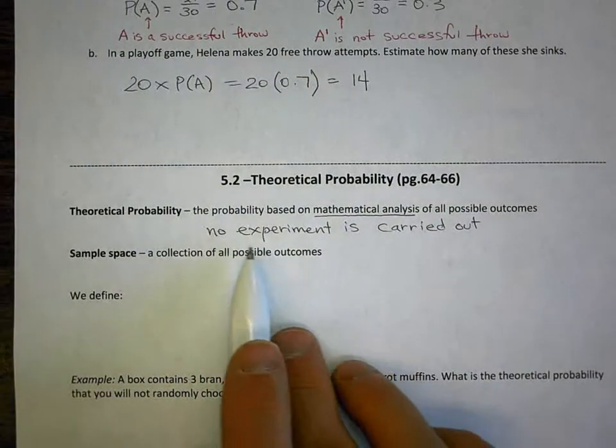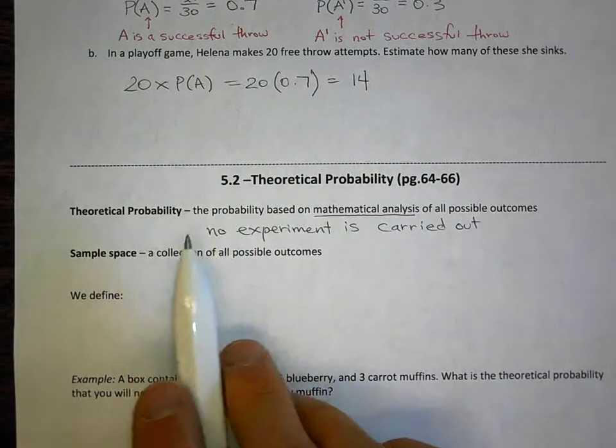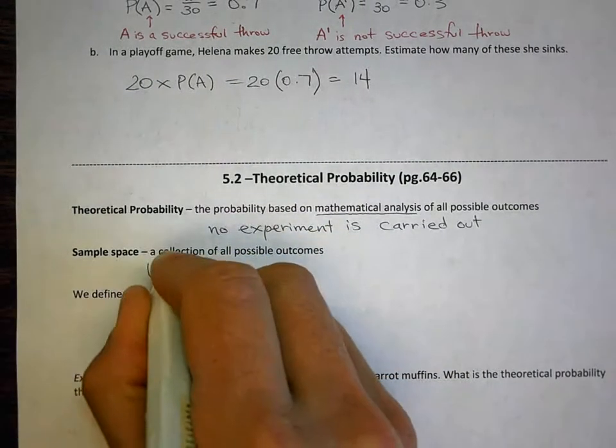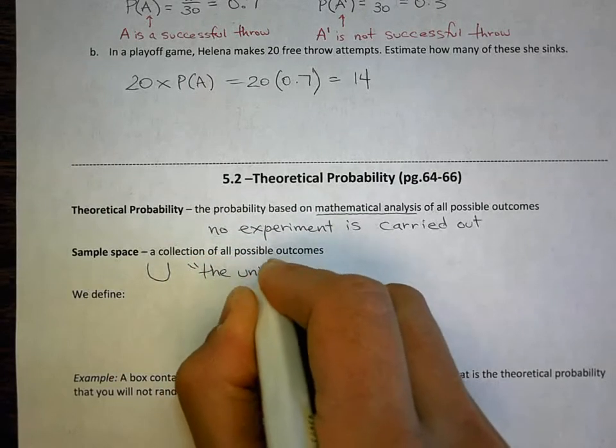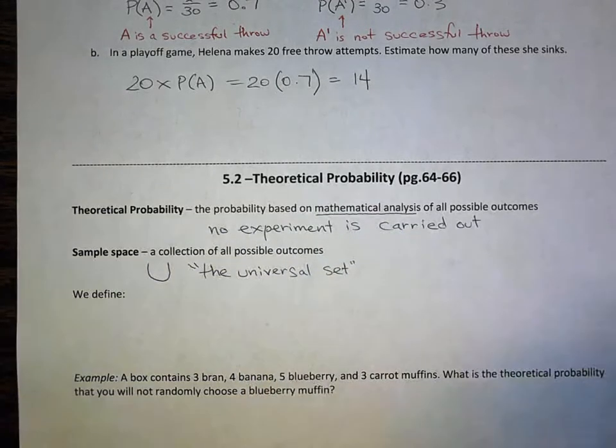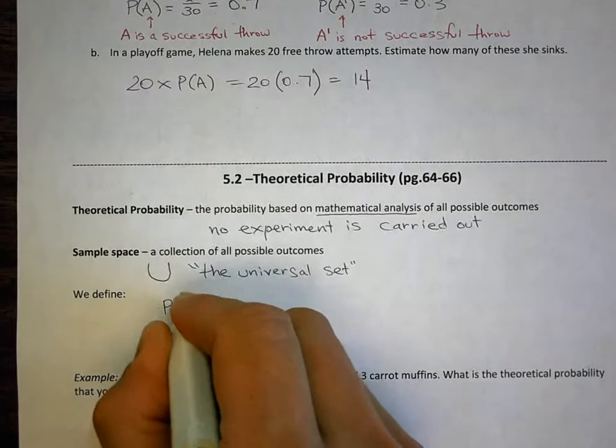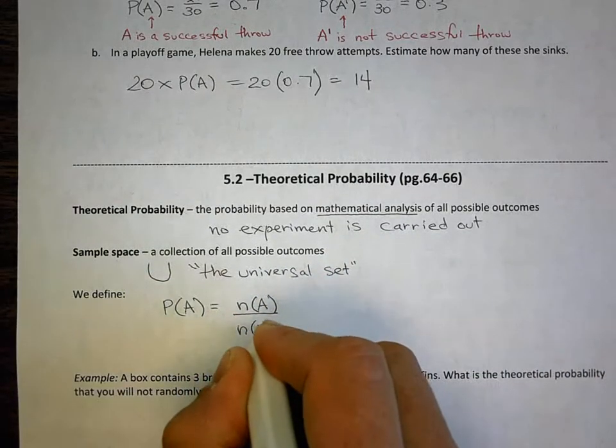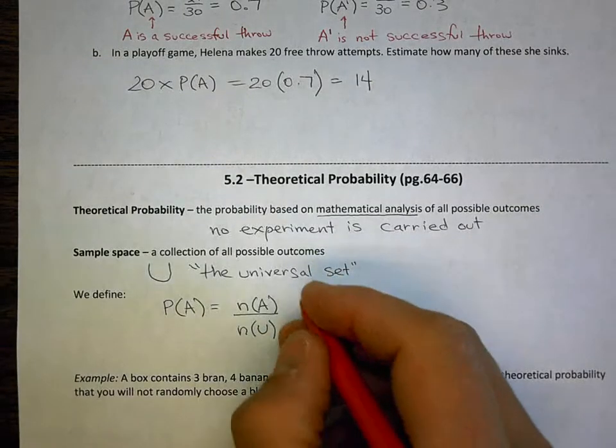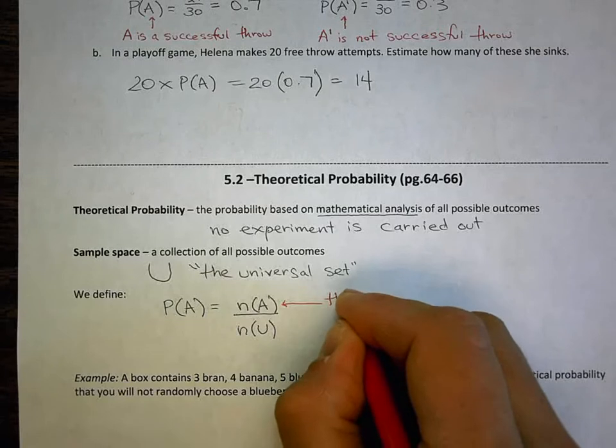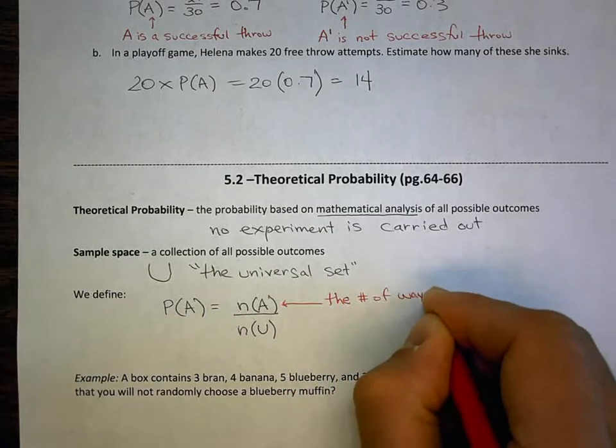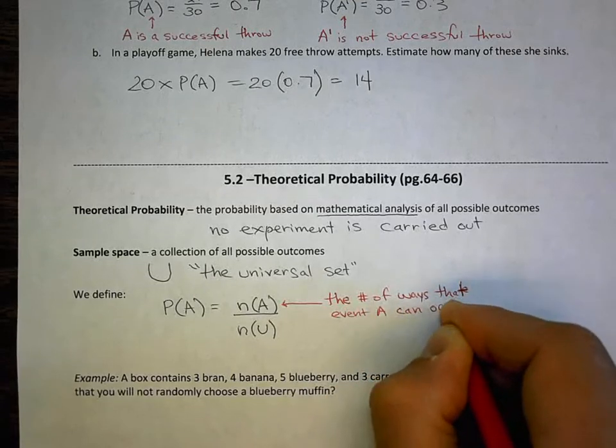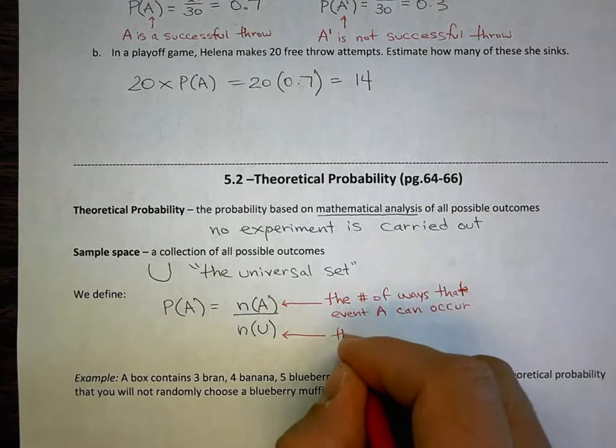So to do this, and we're going to be doing lots of this this chapter, to do this theoretical probability, first of all, I need to define the sample space. Now sample space is all the possibilities, all the possible outcomes. And we usually define this as U. We call U the universal set. Then, to calculate the probability of event A occurring, I would count the number of items, a number of ways the event can occur, and divide it by the number of possible outcomes, or the number of elements of my universal set. So this is our notation. N A is the number of ways that event A can occur. And N U is the total number of possible outcomes.